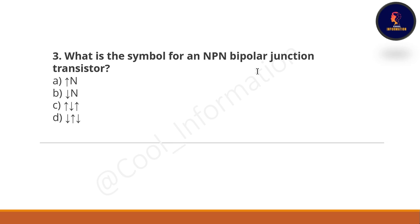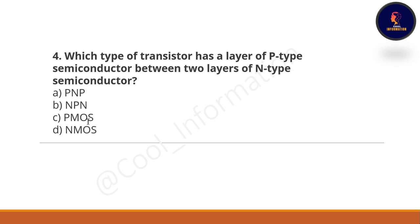Next question: What is the symbol for an NPN bipolar junction transistor? Options are given and the correct option is option D — this is the correct symbol for an NPN bipolar junction transistor.